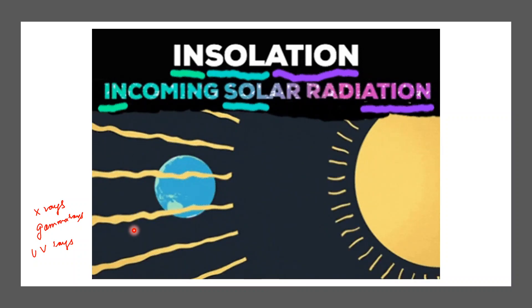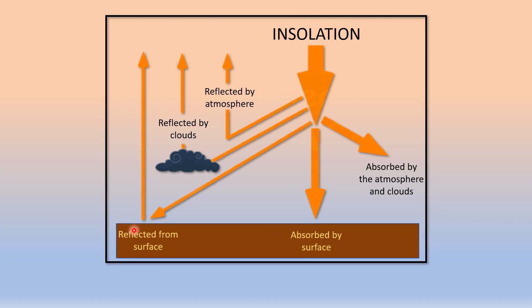However, the earth being very small intercepts a very small amount of energy in the form of insolation. However, this small amount of energy which it receives is enough for maintaining life on earth.